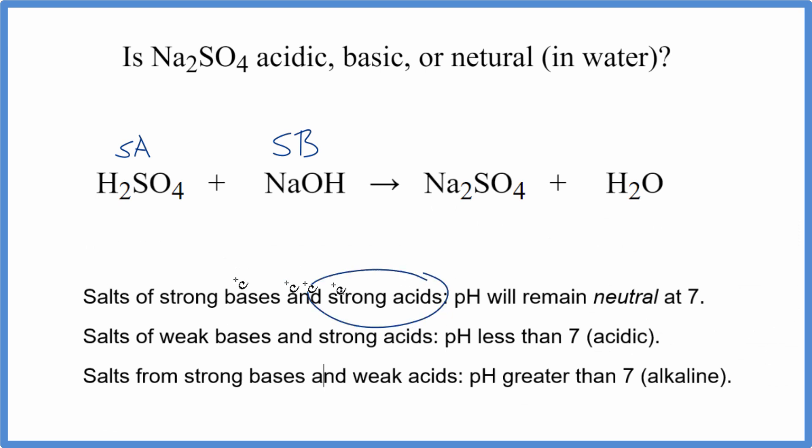When we have a strong acid and a strong base, that means that we'll end up with a neutral pH, pH of about seven.